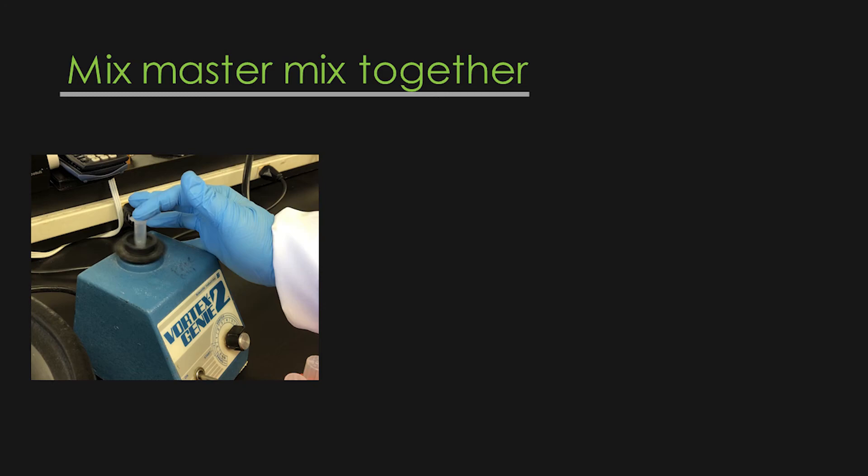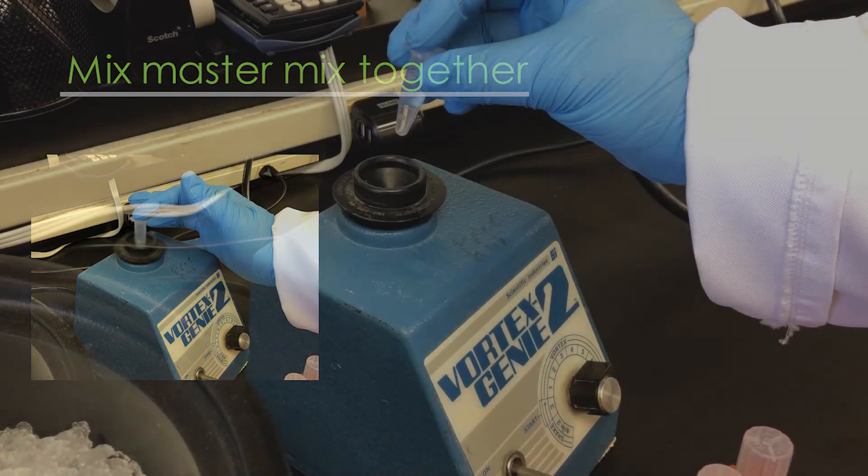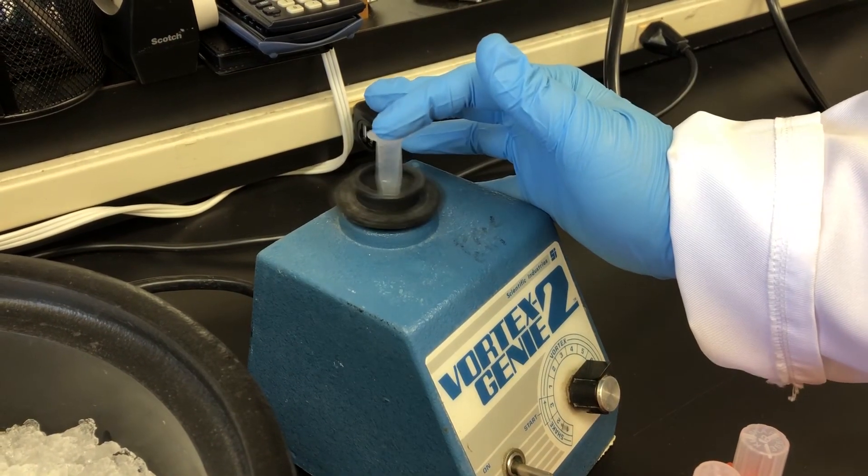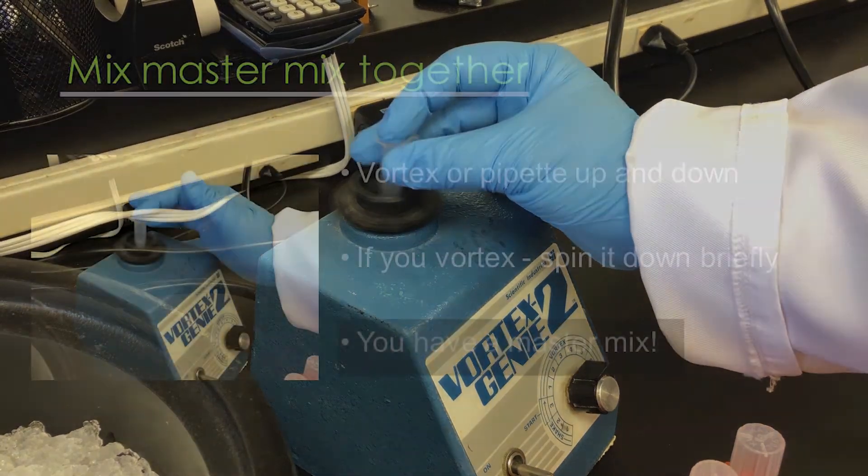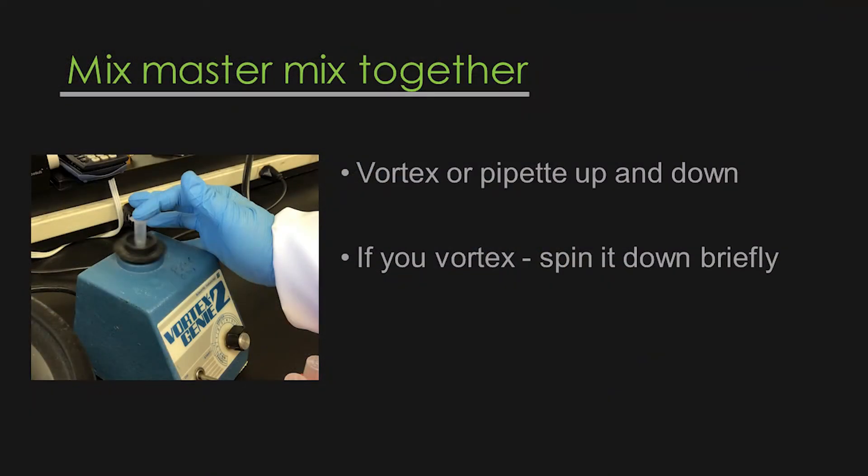Mix it all up, and make sure that it's homogenous. And you can do that either with a vortex, or you can mix it by pipetting up and down. Either one is perfectly fine. Just remember that if you do vortex it, you will also need to spin it down again briefly. And voila, there you have it, a master mix.